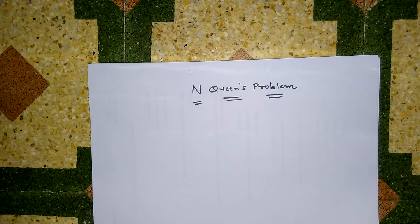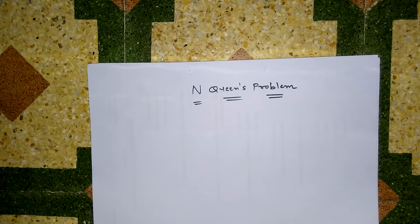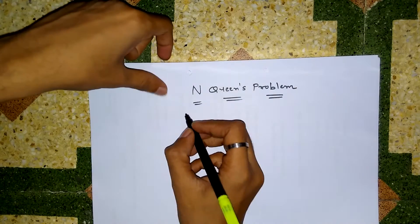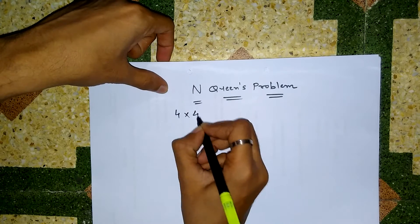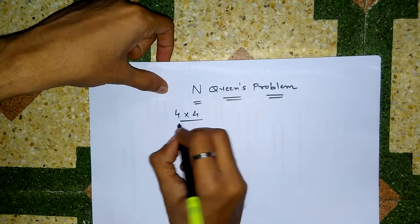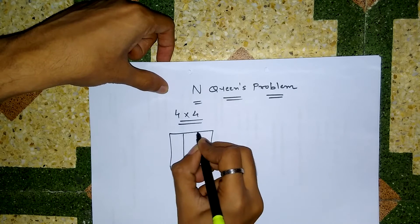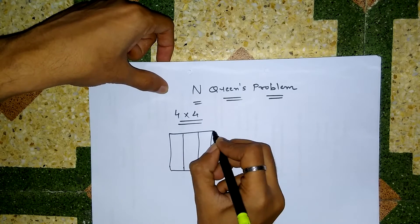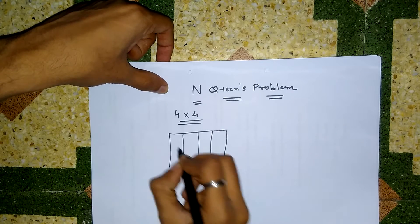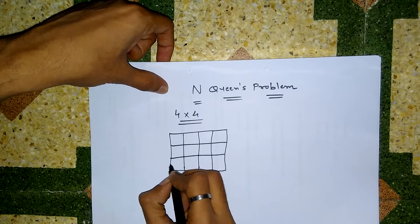Hello friends, welcome to Technology Begins. In this video I am going to show you the N-Queens problem. The N-Queens problem is where we have to put N queens on an N×N chessboard. We are taking an example of a 4×4 chessboard. We have to organize the queens in such a manner that no queen can attack each other.